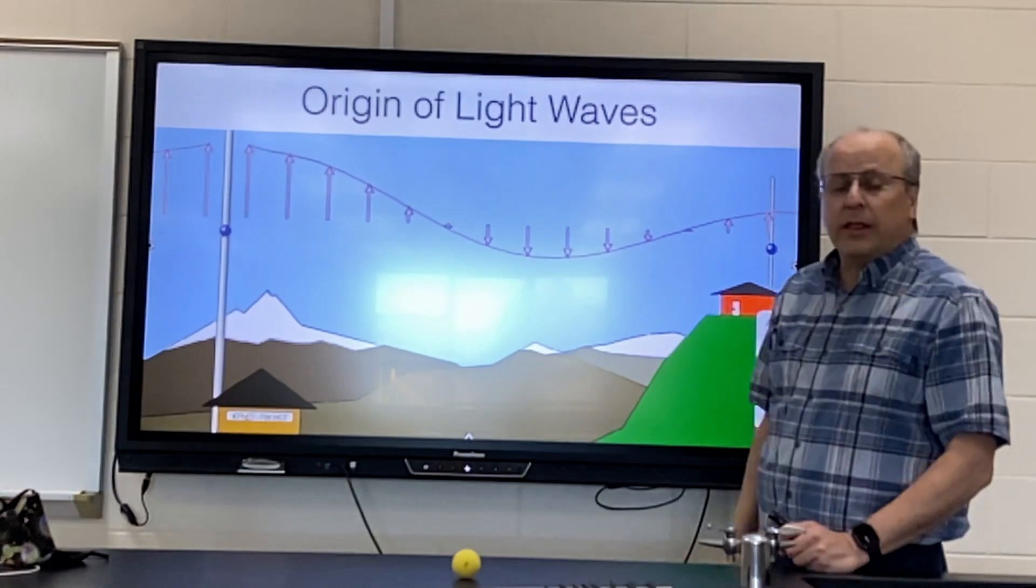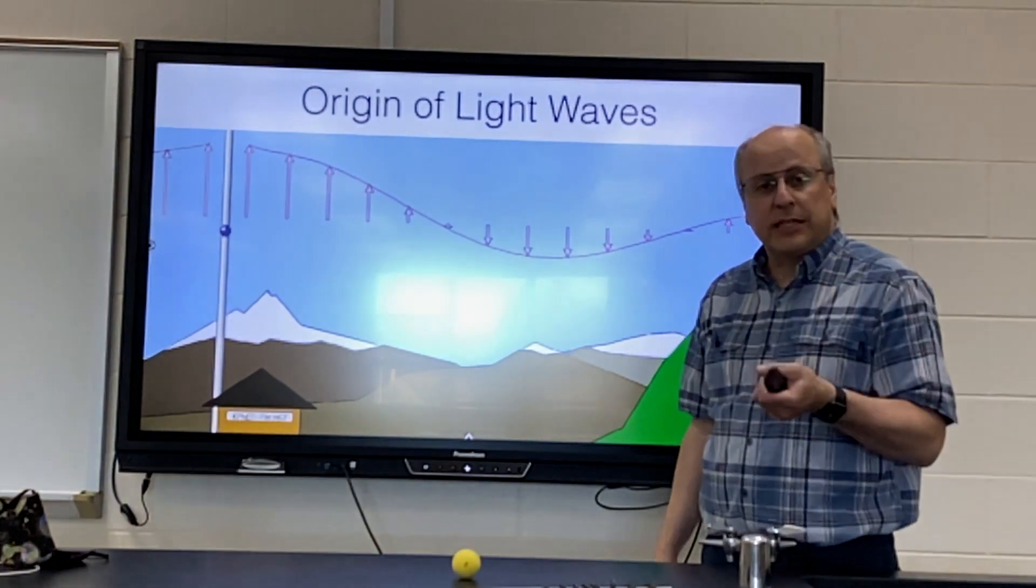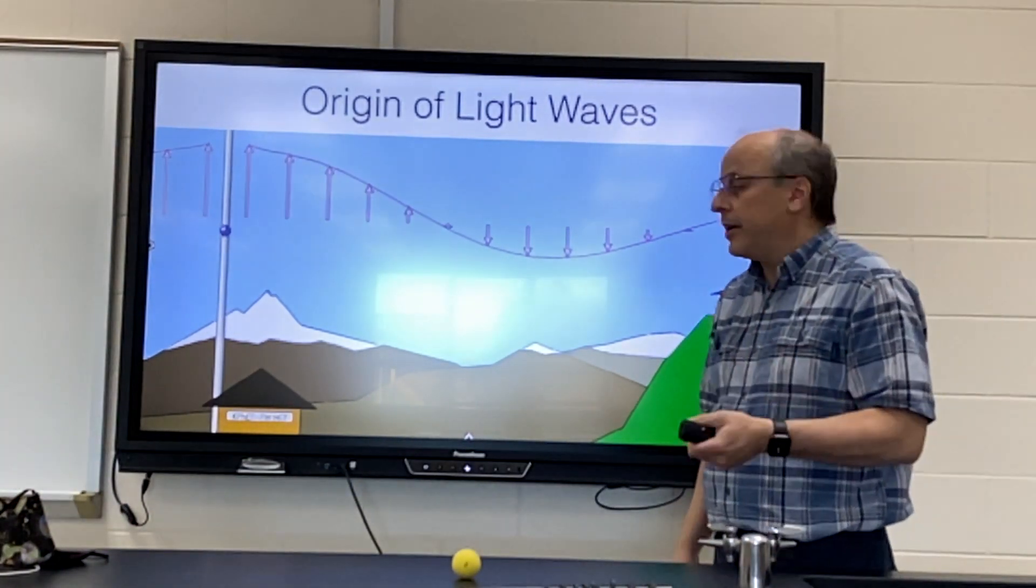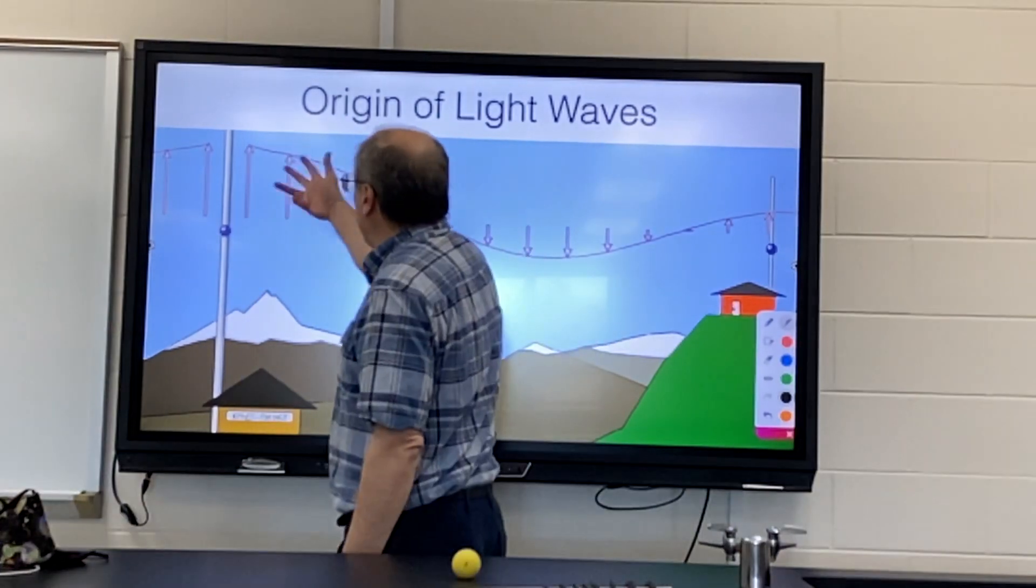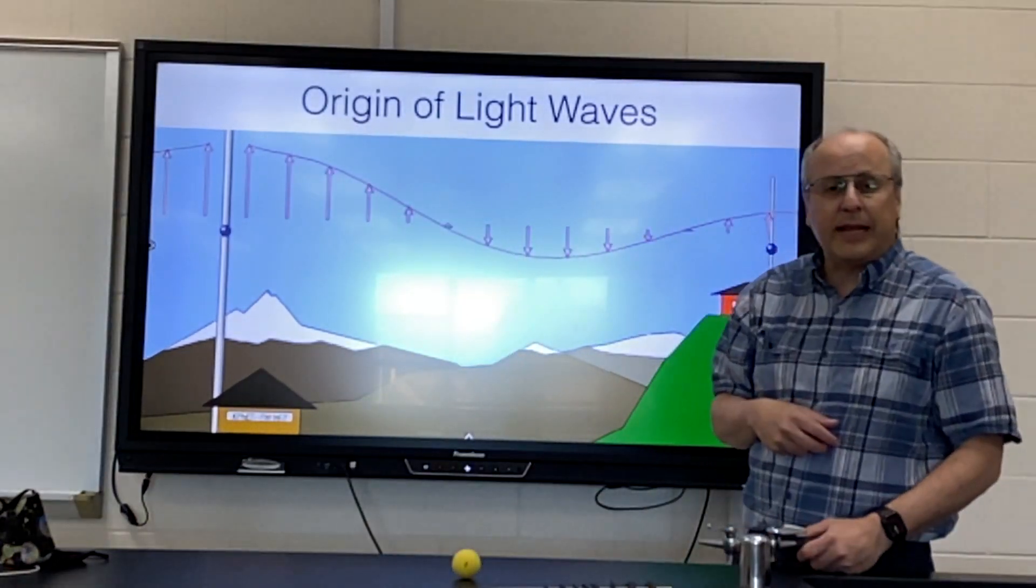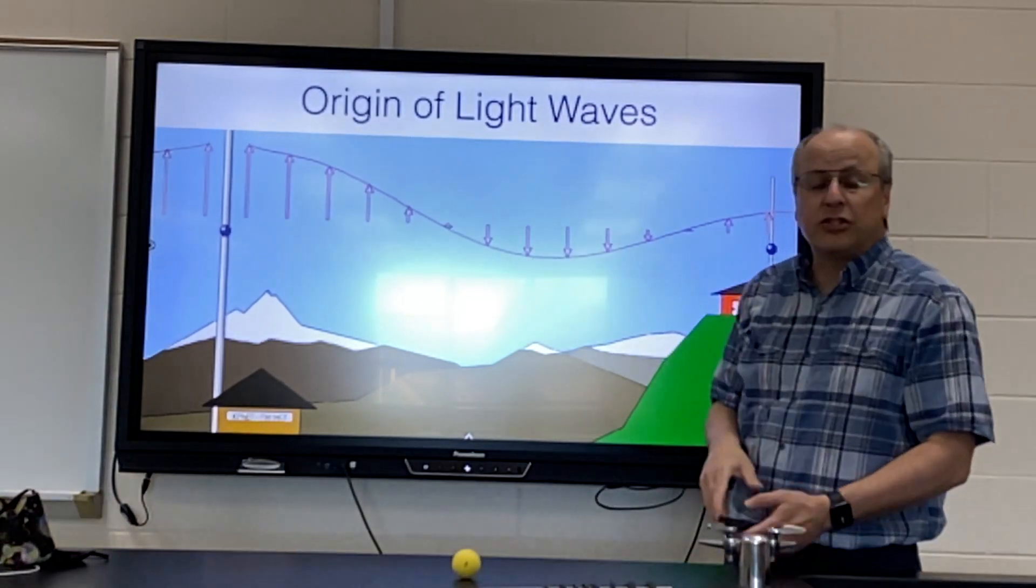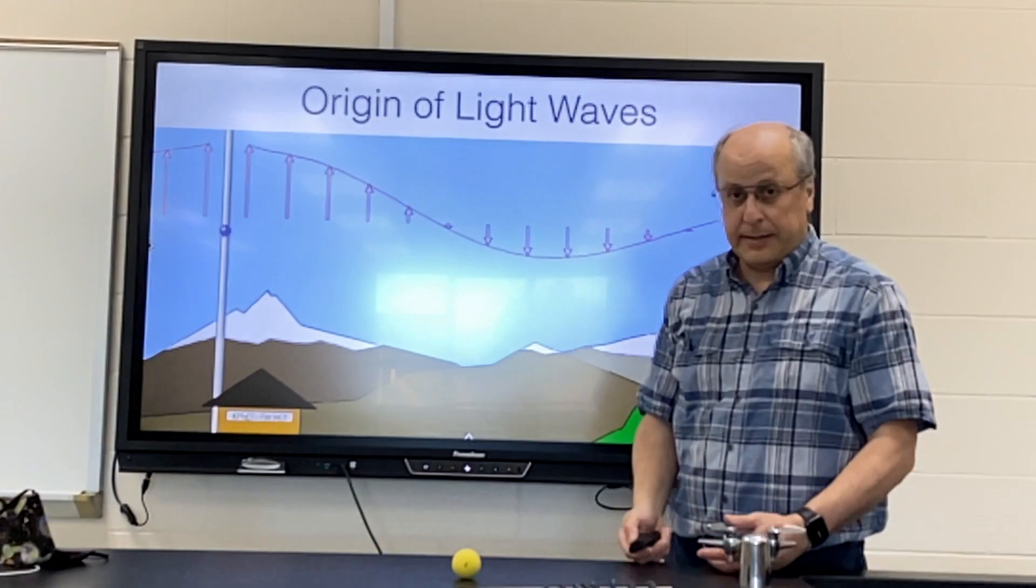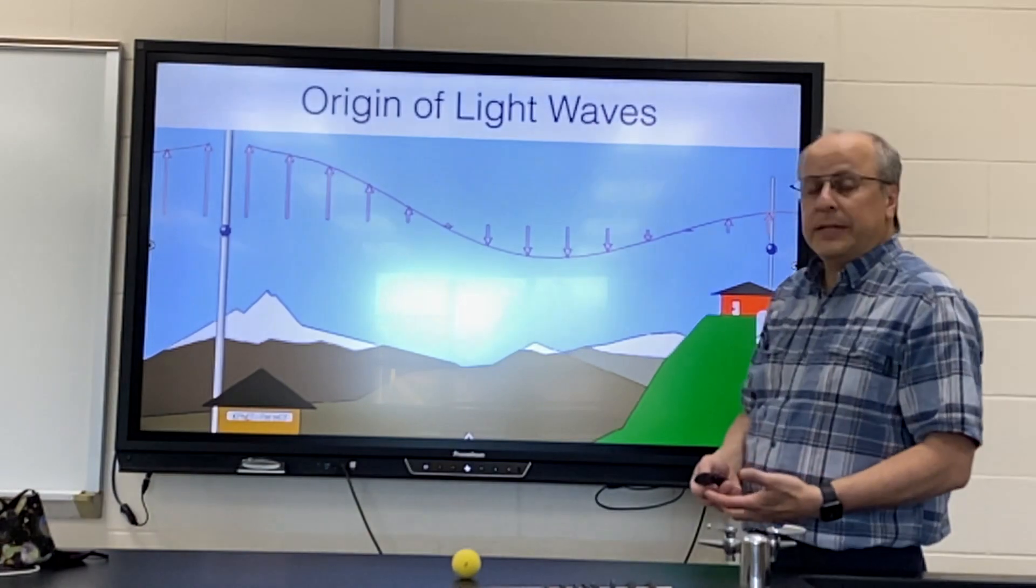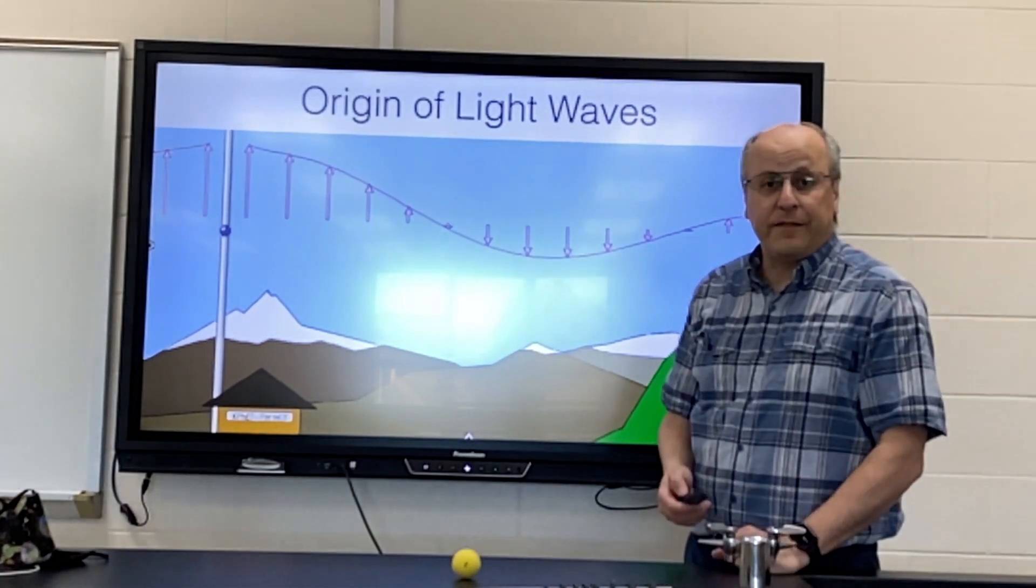I want to remind you that light is produced when we oscillate charges. When we accelerate the charges we disturb the electric and magnetic field around the charge, and the propagation of that disturbance is what we call light. It is a disturbance in the electric and magnetic fields.